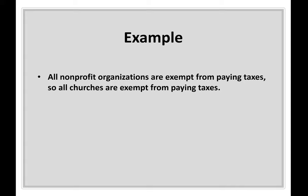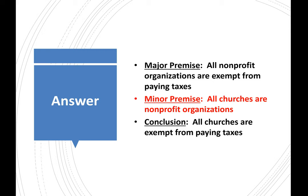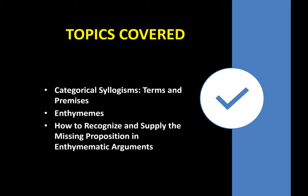Finally: 'All non-profit organizations are exempt from paying taxes, so all churches are exempt from paying taxes.' 'So' indicates the conclusion. You have the conclusion and one premise, and you're missing the minor premise. The complete syllogism: all non-profit organizations are exempt from paying taxes; all churches are non-profit organizations; therefore all churches are exempt from paying taxes. Topics covered: categorical syllogisms, labeling of terms and premises, enthymemes as incomplete categorical syllogisms, and how to recognize and supply the missing proposition in enthymematic arguments.